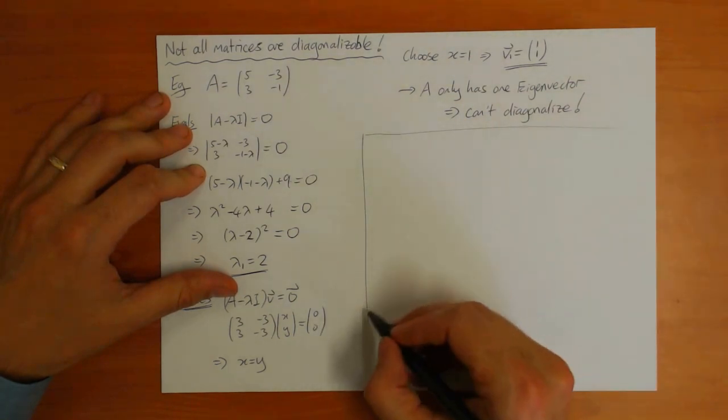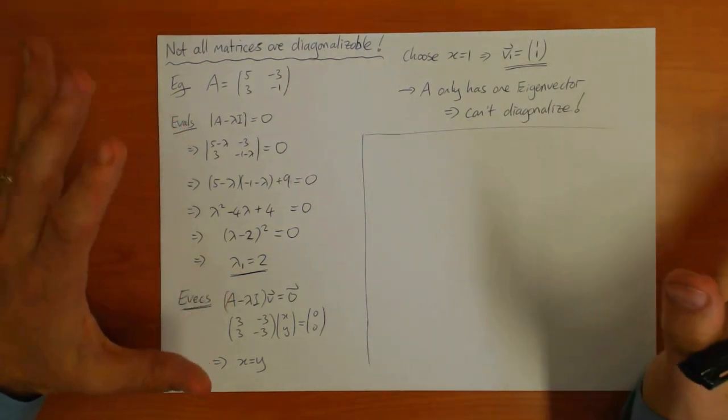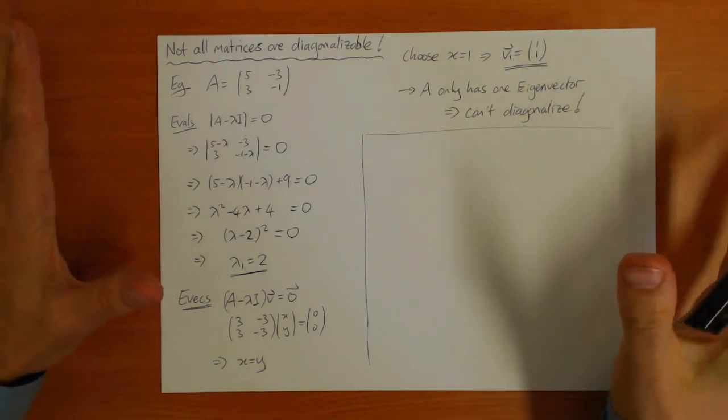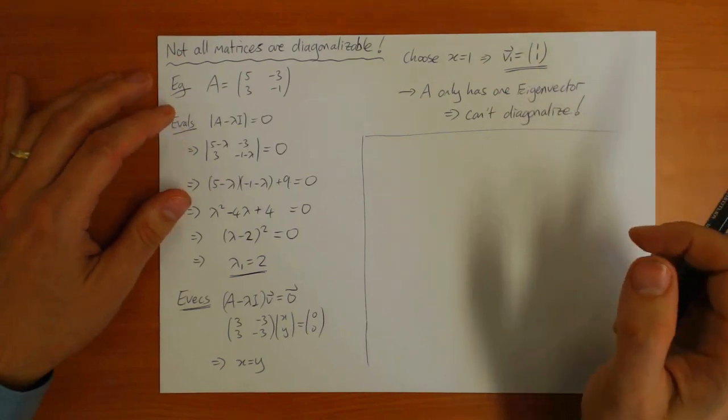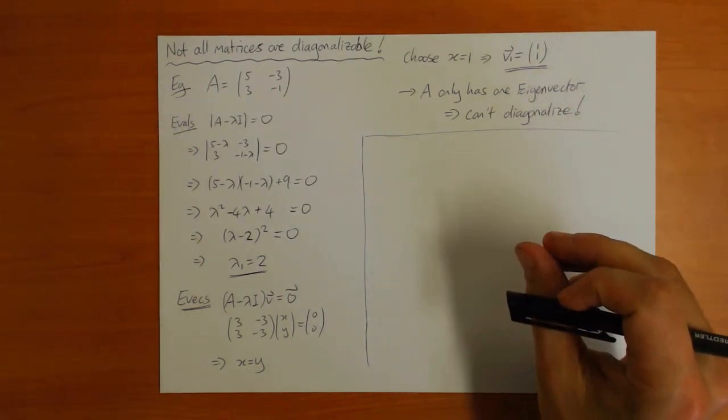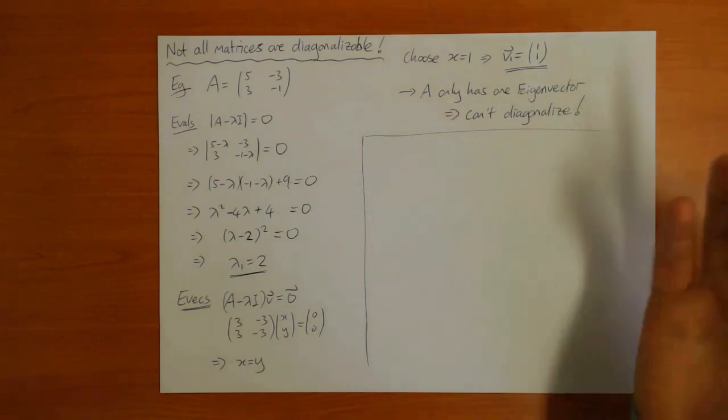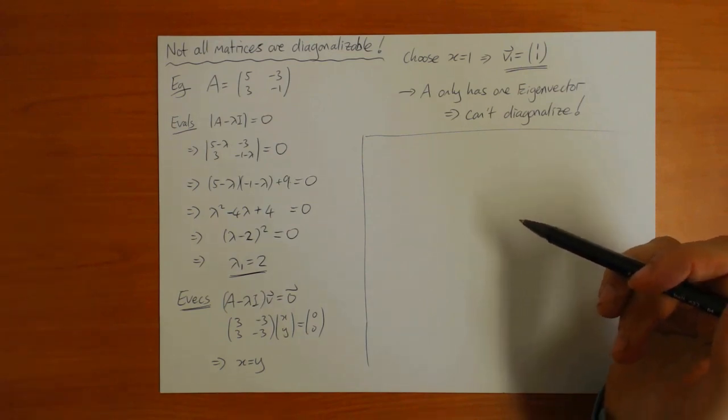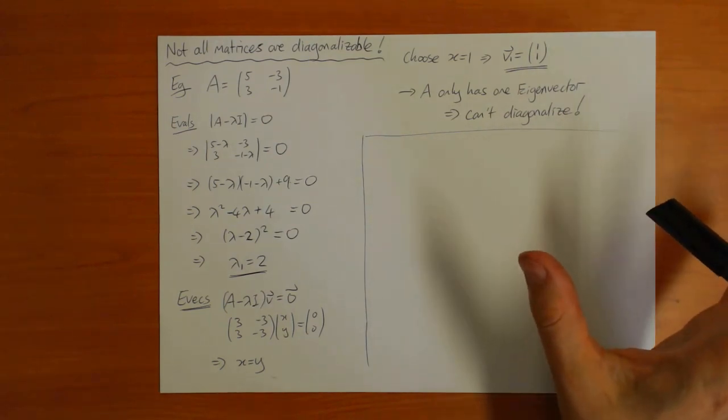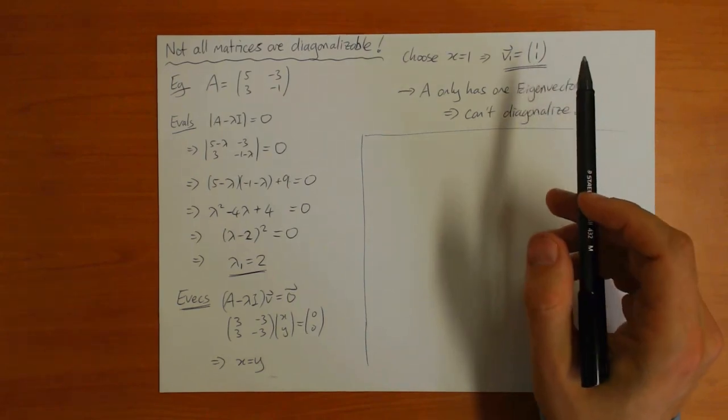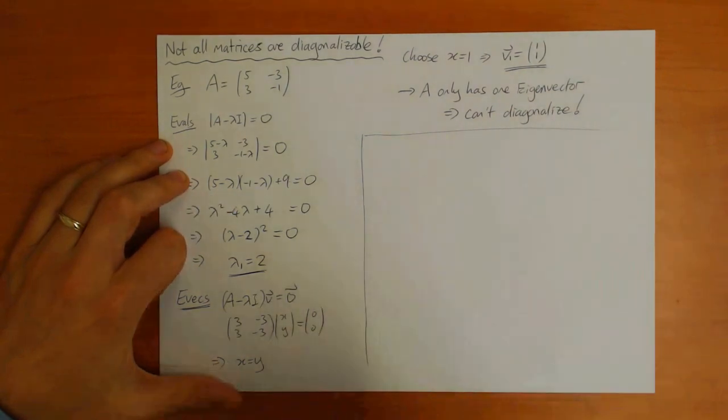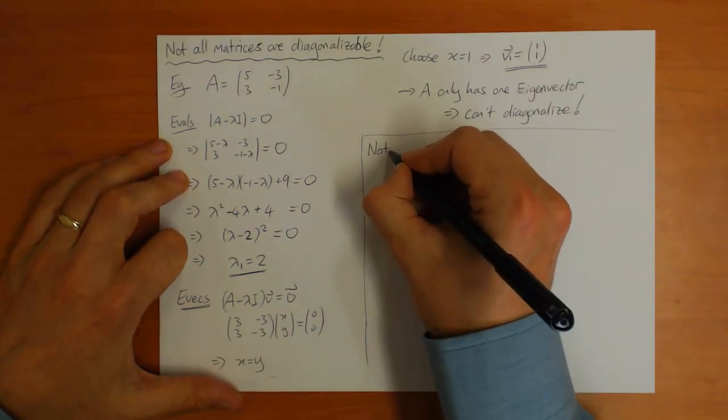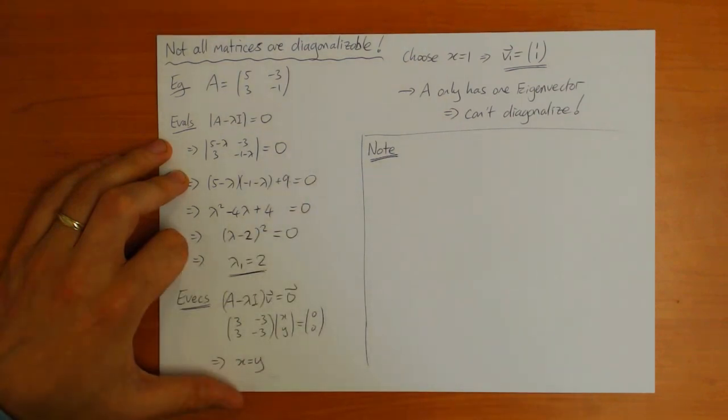However, there are certain kinds of matrices where you can say that it always will work. Certain kinds of matrices always have n eigenvectors, and these matrices are precisely the ones I described last week. The symmetric, anti-symmetric, orthogonal, and Hermitian, anti-Hermitian, and unitary matrices - you can prove that they always have n eigenvectors. Therefore, they can always be diagonalized.